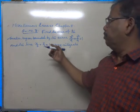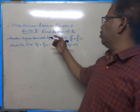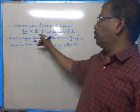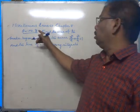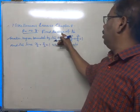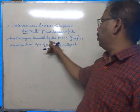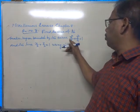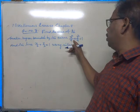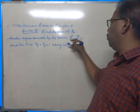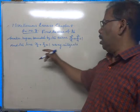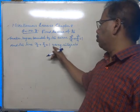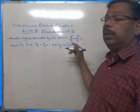Here is a question from the miscellaneous exercise from chapter 8, question number 8. Find the area of the smaller region bounded by the curve x²/9 + y²/4 = 1 and the line x/3 + y/2 = 1 using integrals.